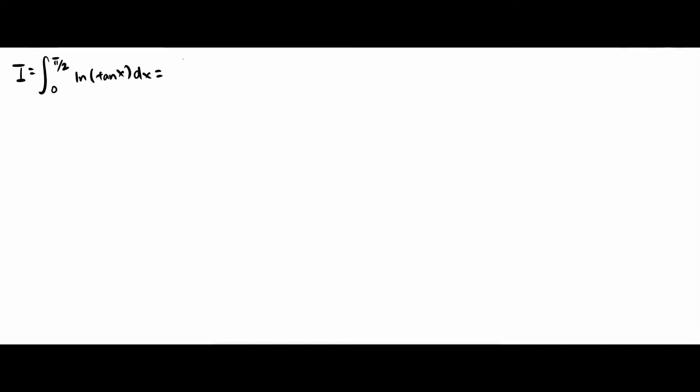The first thing we do is to split this integral up into two integrals. So the first integral will be from 0 to pi over 4 of ln(tan x).